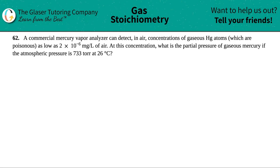Number 62: a commercial mercury vapor analyzer can detect in air concentrations of gaseous Hg atoms, which are poisonous, as low as 2 times 10 to the negative 6 milligrams per liter of air. At this concentration, what is the partial pressure of gaseous mercury if the atmospheric pressure is 733 torr at 26 degrees Celsius?